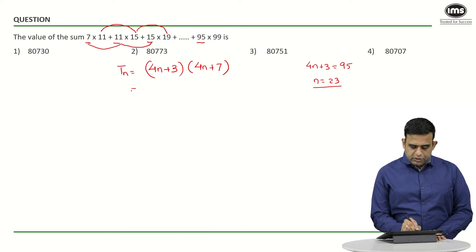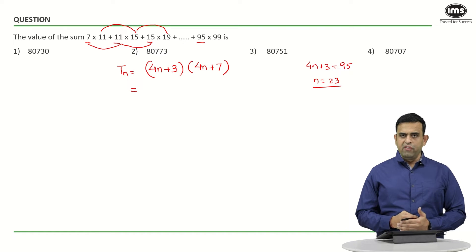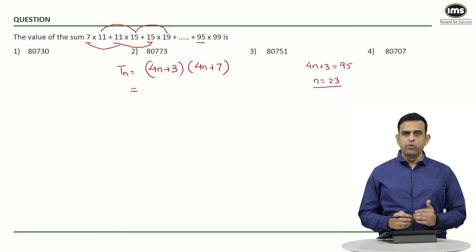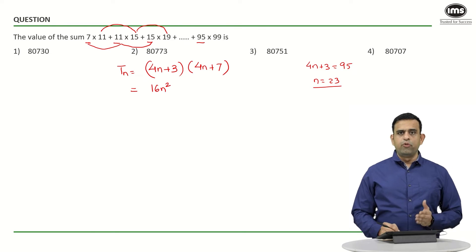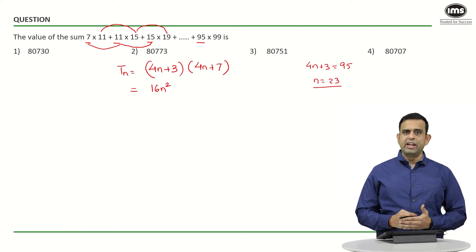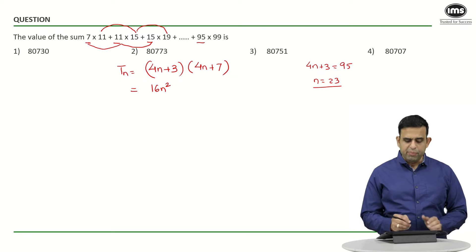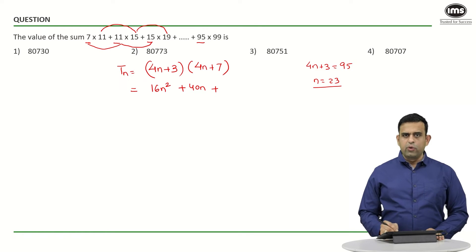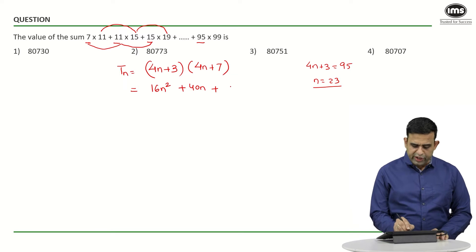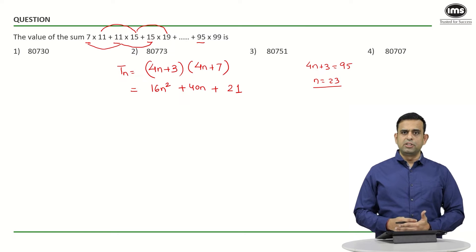We find tn by multiplying (4n + 3)(4n + 7). Expanding: 4n × 4n = 16n², then 4n × 7 = 28n and 3 × 4n = 12n, giving 40n, and 3 × 7 = 21. So tn = 16n² + 40n + 21.